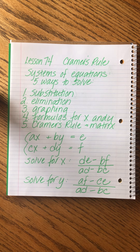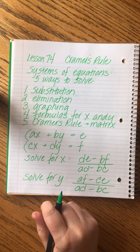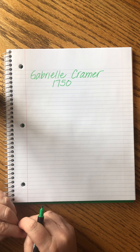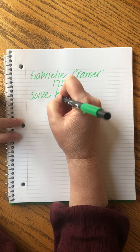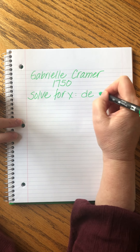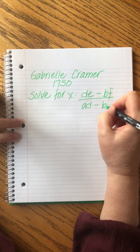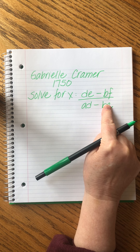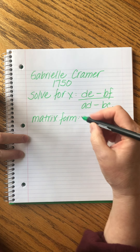Right now you might be thinking, 'I don't know what you're talking about,' but you do know what a matrix is — a two-by-two matrix, which we learned how to solve. You multiply up and down and then subtract down and up. That's what we're going to do with these formulas. So let me recopy the formulas so we can compare them. When we solve for X, the formula is X = (DE − BF) / (AD − BC).